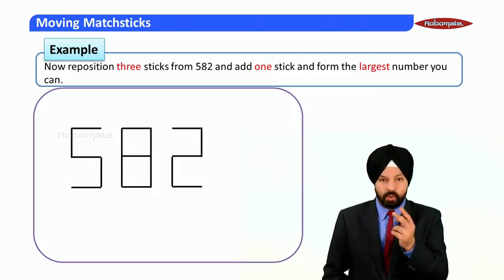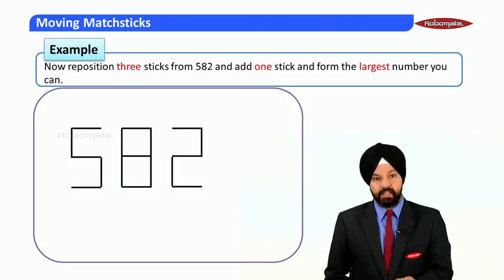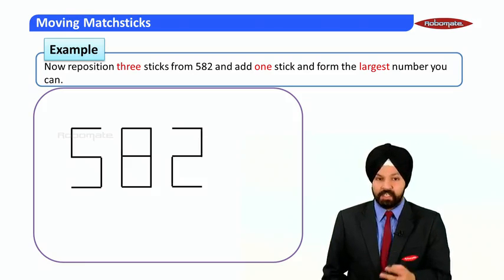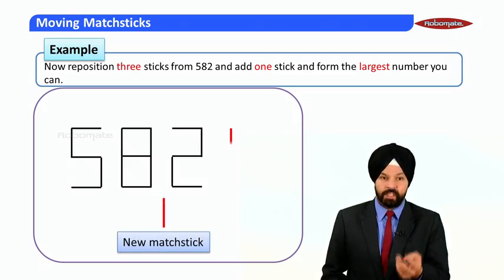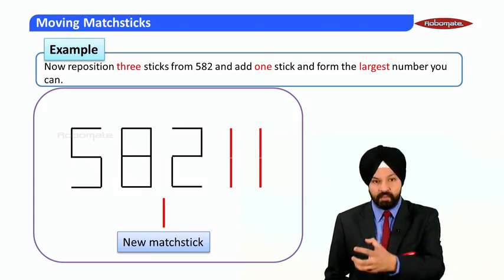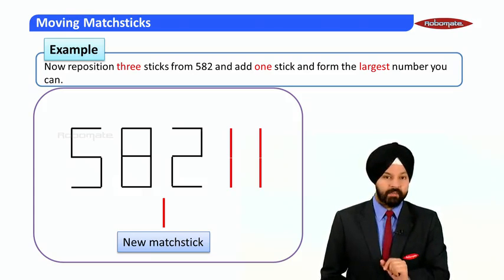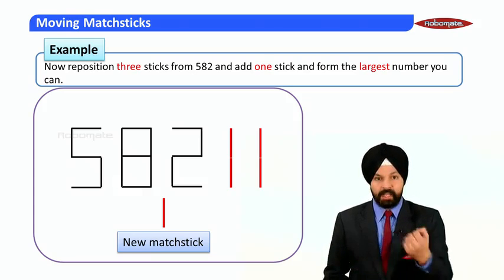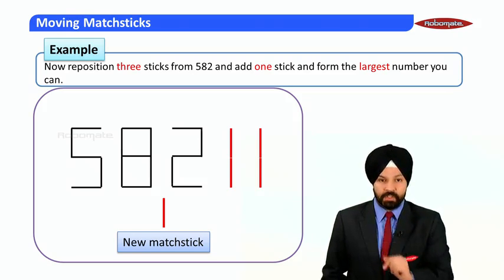The moment I come to know that I have to reposition three and add one, that means I can play with four matchsticks, and allowance of four matchsticks means I can create two newer digits. Those two digits would obviously be two ones. So you can see I have used the new matchstick and I have also used three matchsticks to create ones. But one thing is pending: I have to pick three matchsticks which I have already used to create two ones. Now here lies the catch. From where shall I be picking those three matchsticks?